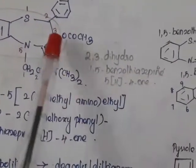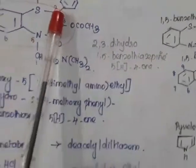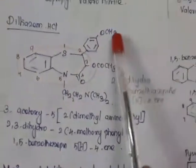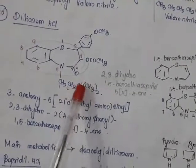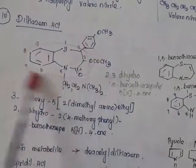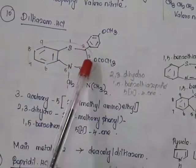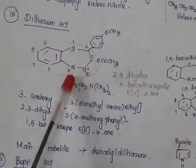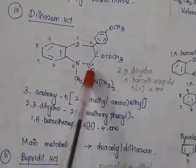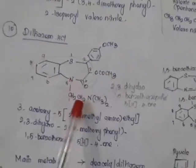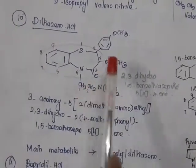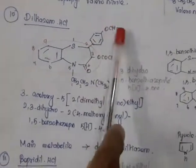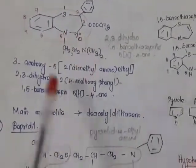With the parent ring 2,3-dihydro-1,5-benzothiazepine-5H-4-one, what is attached? At the third position, we have an acetyloxy (acetoxy) group. At the second position, we have a 4-methoxyphenyl group. At the fifth position, we have a dimethylaminoethyl group, with the second carbon of ethyl connected. So the chemical name is 3-acetoxy-5-(2-dimethylaminoethyl)-2,3-dihydro-2-(4-methoxyphenyl)-1,5-benzothiazepine-5H-4-one — that is diltiazem.